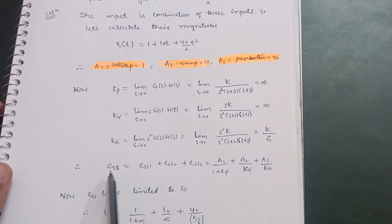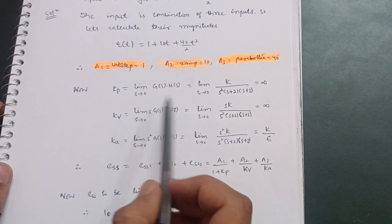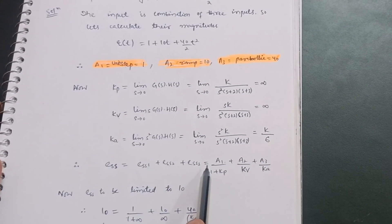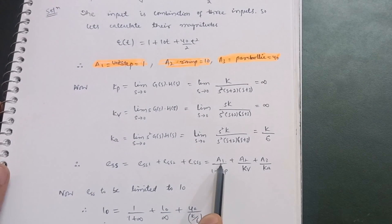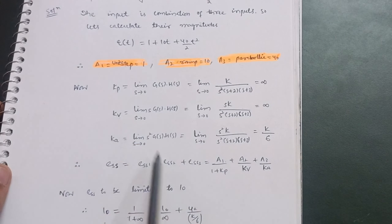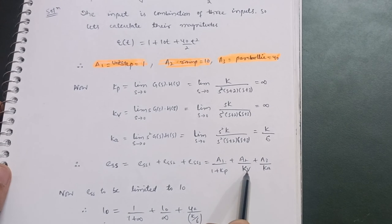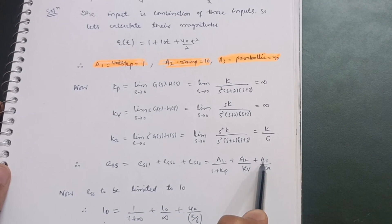Now apply the steady-state error formula: ess = a1/(1+Kp) + a2/Kv + a3/Ka. This combines the steady-state errors due to step, ramp, and parabolic inputs respectively.